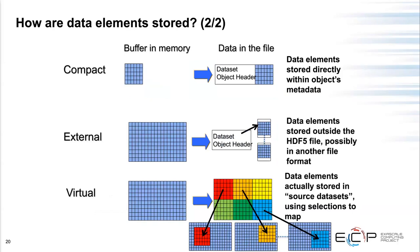There are three more esoteric storage layouts: compact storage for very tiny datasets stored alongside metadata; external storage where the data resides in another file and HDF5 points to it; and virtual datasets, which compose a view from datasets stored across many other HDF5 files. Virtual datasets are often used at light sources to gather a single coherent view from many cameras captured at the same time.